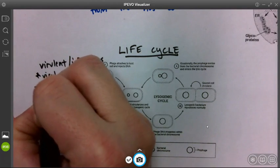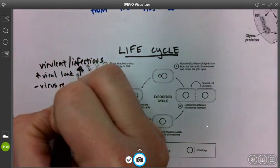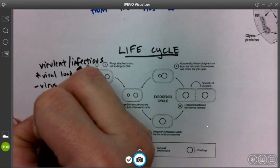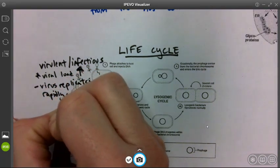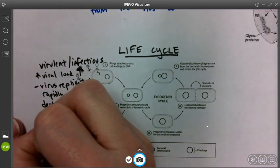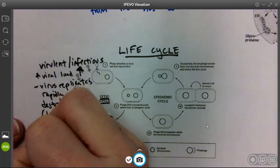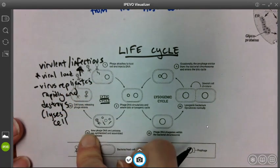So basically what happens is the virus replicates rapidly and destroys or lyses the cell.